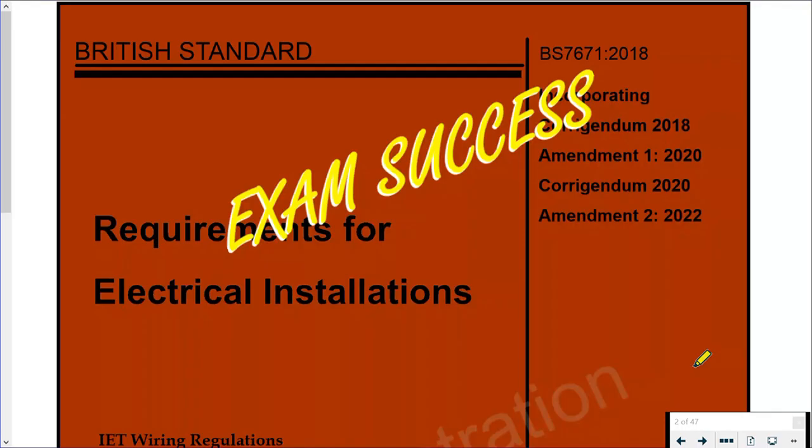Welcome to this short video on exam success for the City & Guilds 2382 exam and BS 7671 2018, currently Amendment 2. As we run through, remember to pause the video as we are jumping to contents, pages, and index, and then bouncing back into the front of the book to try to find the answer for the question.